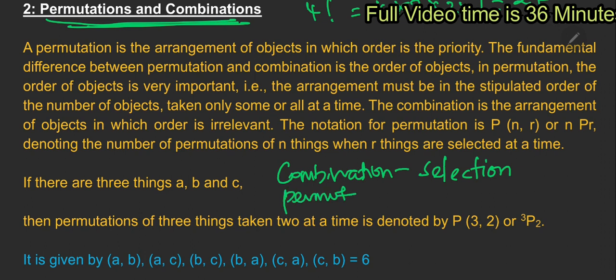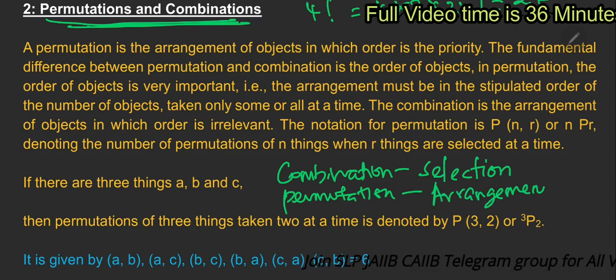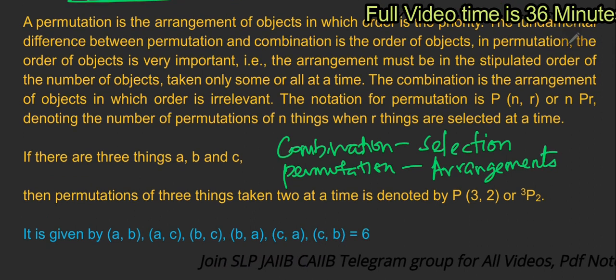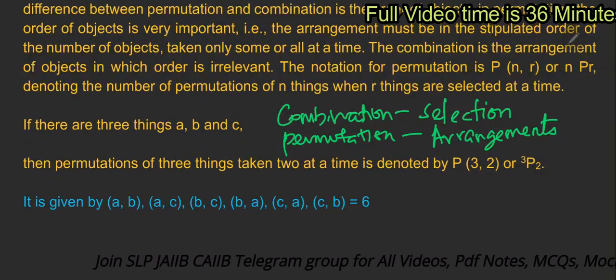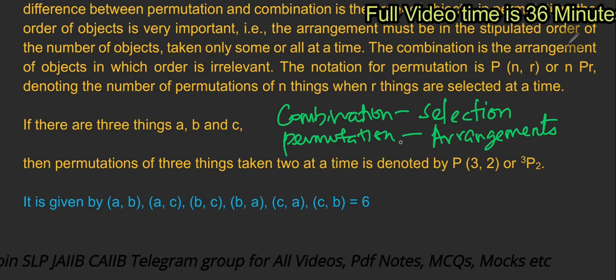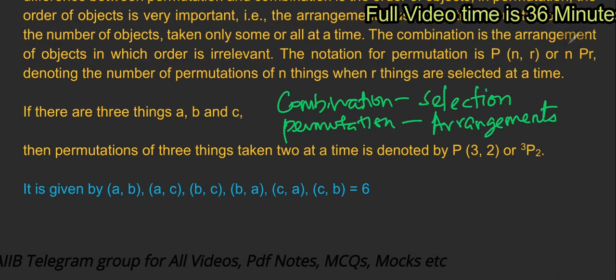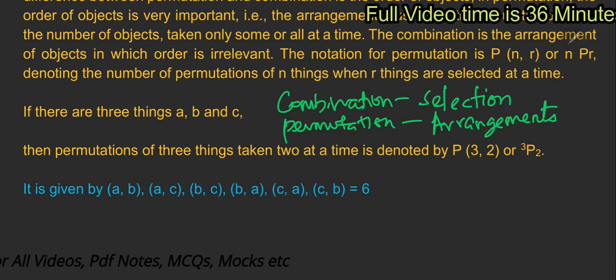What do we do with the permutation? Permutation is arrangement. When you select items and then arrange them in a specific order, that is permutation. The arrangement is compulsory and very important. In combination you only select; in permutation you select and then arrange in order.